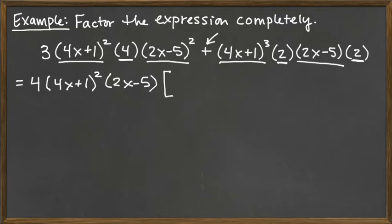In the term that comes before the plus sign, we have left over that constant 3. The 4x plus 1 to the second power, we pulled out that completely as well as the 4. But the 2x minus 5 raised to the second power, we did not pull it out completely. We just pulled out one copy of it, so we're left with one more copy there for our first term.